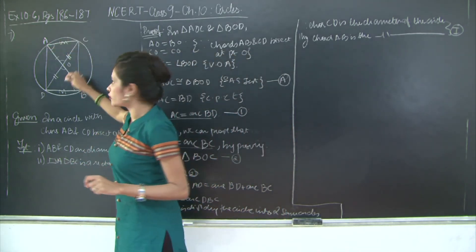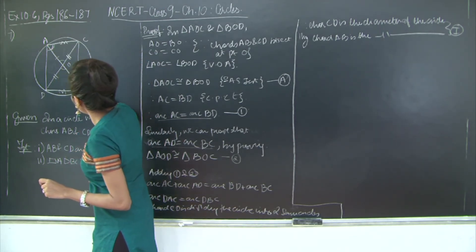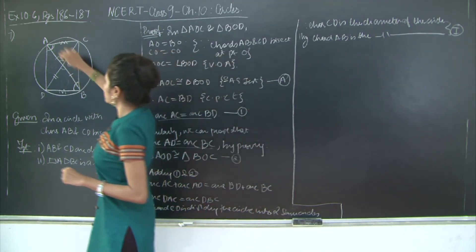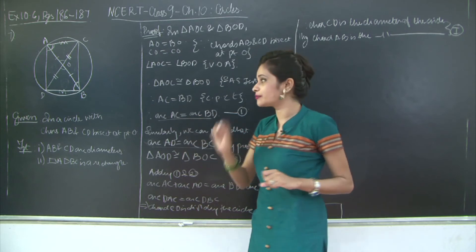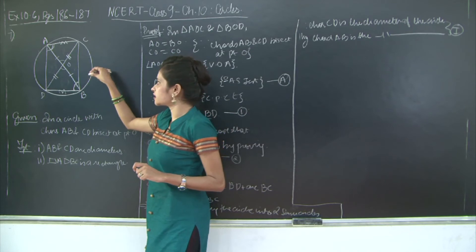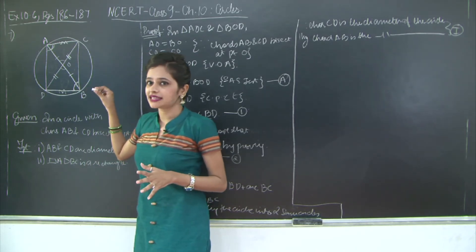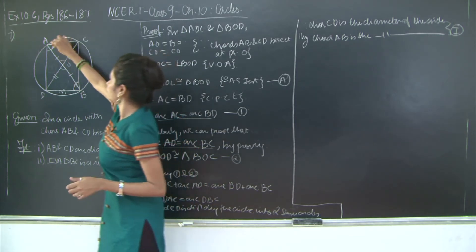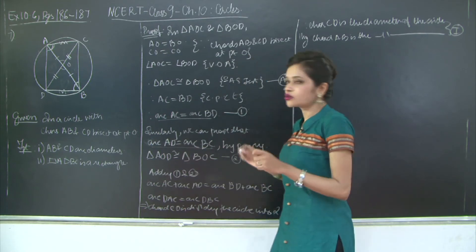Since ADBC is a parallelogram, angle CAD equals angle DBC as opposite angles of a parallelogram. But angle CAD plus angle DBC also equals 180 degrees because quadrilateral ADBC is a cyclic quadrilateral — all points A, D, B, C lie on the circumference of the circle. Since the two angles are equal and their sum is 180 degrees, each angle must be 90 degrees.